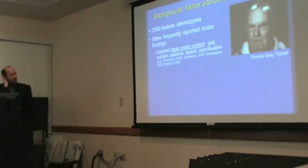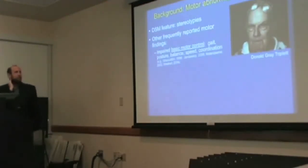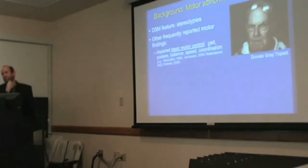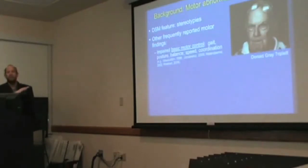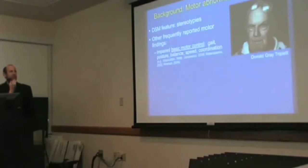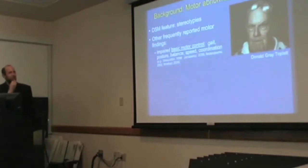Many individuals with autism demonstrate problems with basic motor control — problems with gait, posture, balance, speed, and coordination. There are dozens of studies that have supported the presence of these abnormalities. I also want to mention Donald Gray Triplett — the first person ever described with autism. In Leo Kanner's original 1943 presentation of autism, he is case number one. An article in the Atlantic Magazine followed him, and notably described some very odd gait patterns and motor abnormalities, so even in Kanner's first case we see these difficulties.